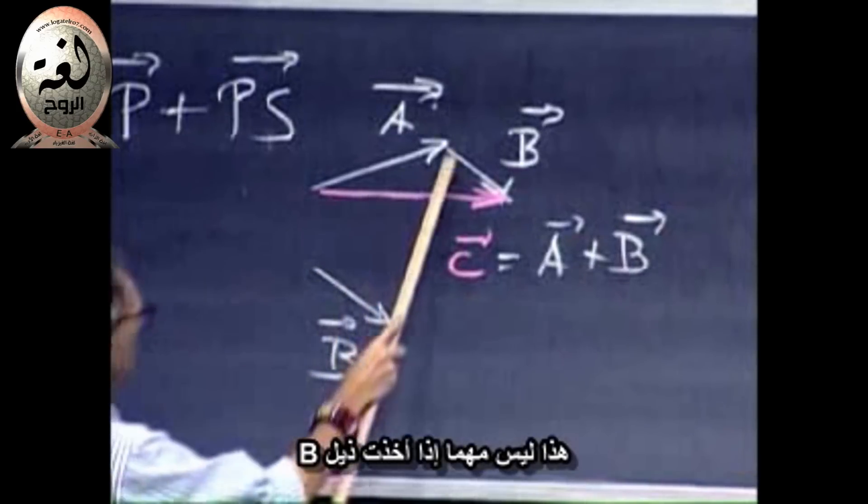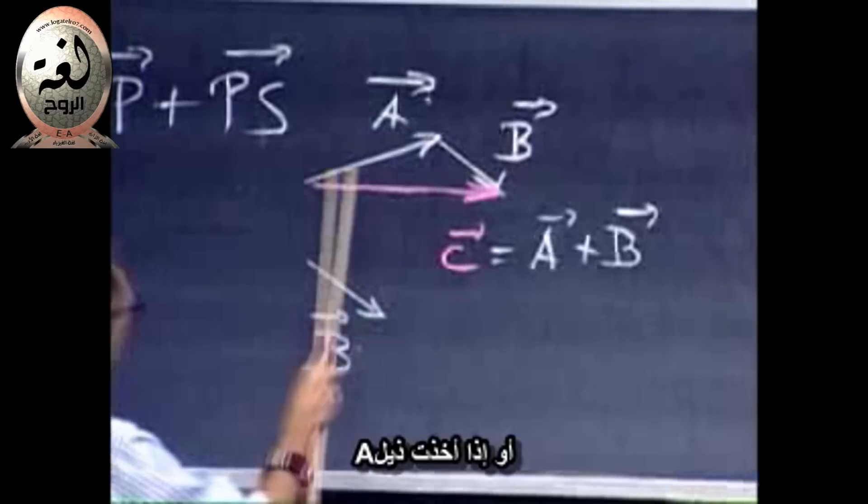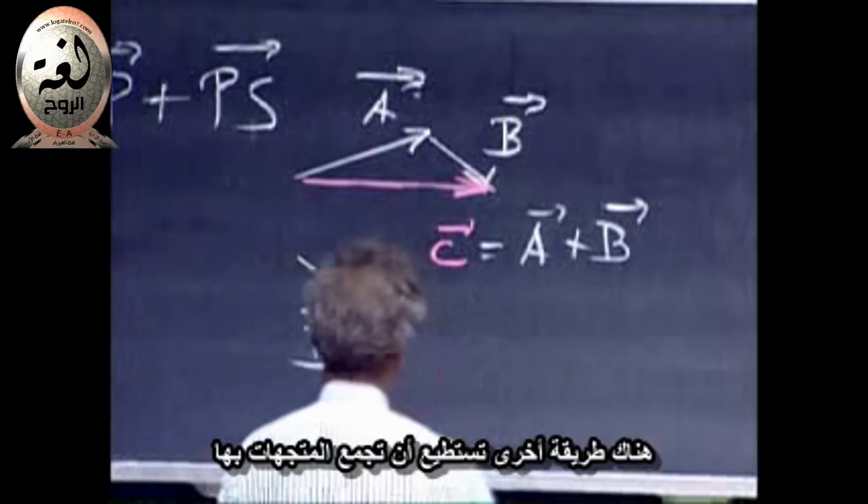That's one way of doing it. It doesn't matter whether you take B, the tail of B, to the head of A, or whether you take the tail of A and bring it to the head of B. You'll get the same result. There's another way you can do it, and I call that the parallelogram method.